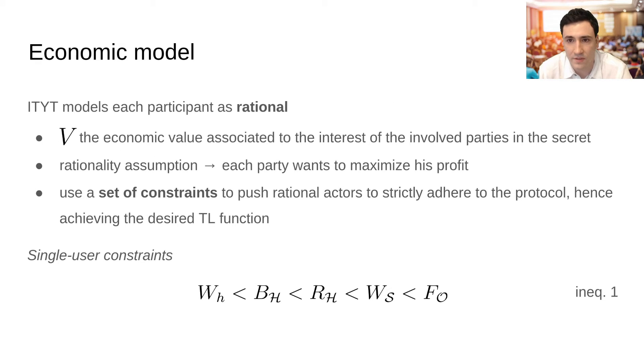As said before, in this setting we model each participant as rational, or rather someone that subverts the protocol only if it's economically convenient. The economic value V represents the interest associated to the secret. Its usage permits to analyze the behavior of the parties involved in the protocol. Under the assumption that each one wants to maximize his rewards, we develop a set of constraints to push rational actors to strictly adhere to the protocol, hence achieving the desired time lock function. Here you can see the single user constraints, that are used to promote share and secret whistleblower, and also guarantee that the shareholders have a payoff.